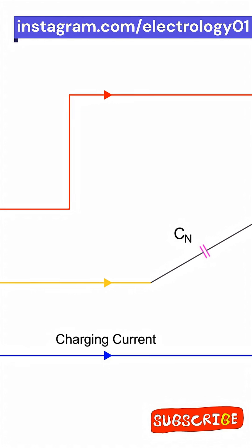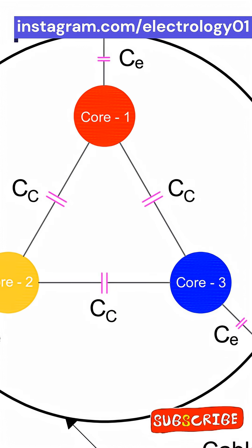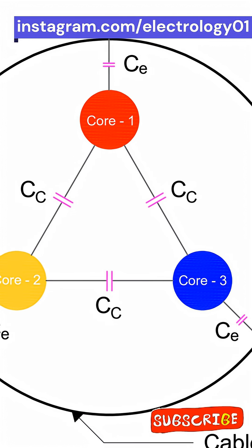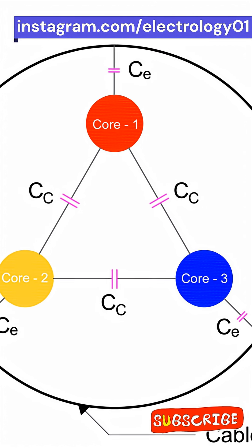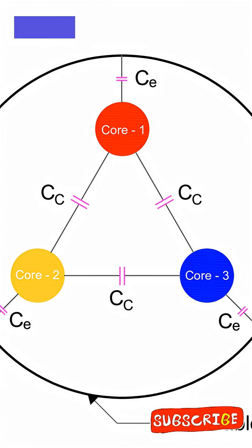Even with no load connected, the cable still draws current from the supply. Yup, that is the charging current, thanks to those invisible capacitors inside the cable known as core-to-earth and core-to-core capacitance.